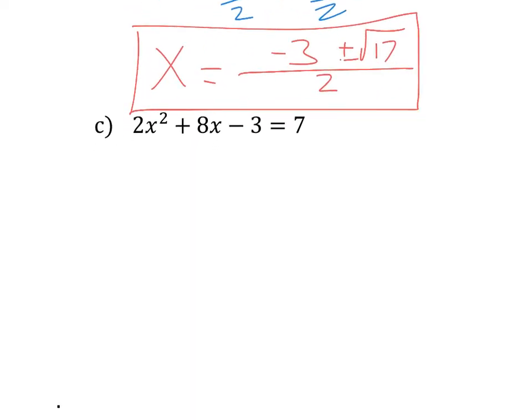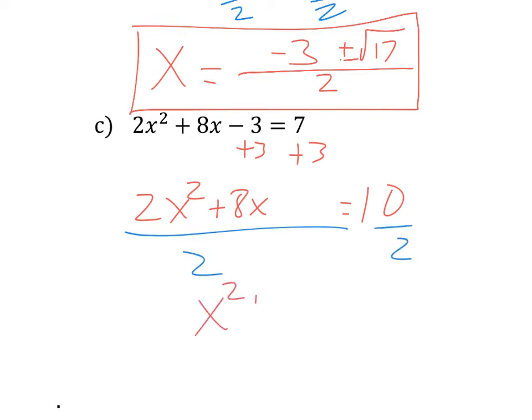So next, this one has a 2 in front. We're going to want a 1 there, so we're going to have to divide that. But let's get that 3 out of there first. So add 3 and we get 2x squared plus 8x equals 10. Now we can divide everything by 2, and that gives us x squared plus 4x equals 5. Now let me actually move that a bit there.